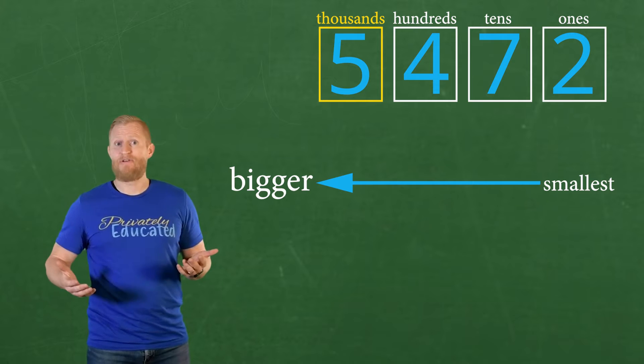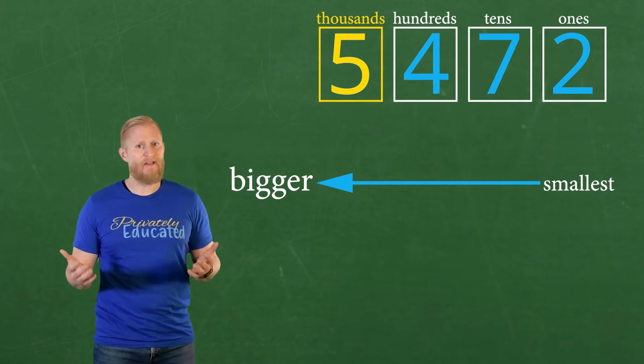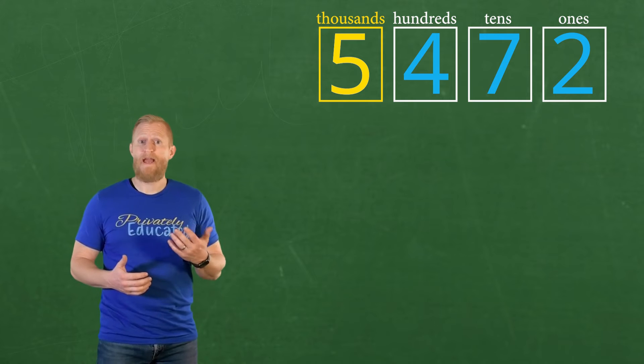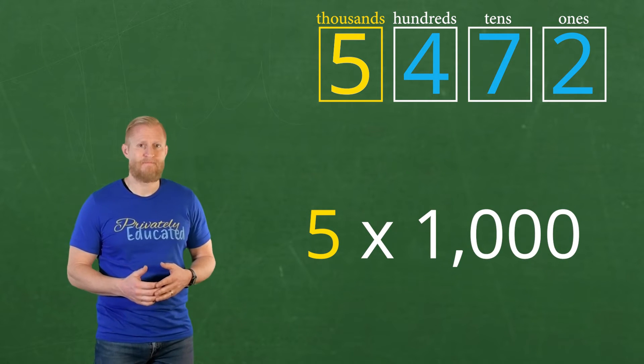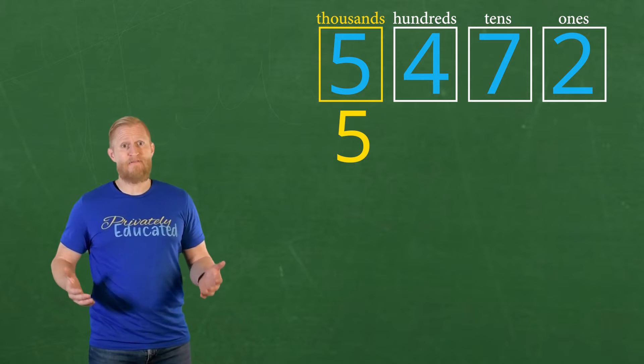And as you can see, we have a five in our thousands group. So we have five groups of 1,000. Let's separate that from the rest of our number.